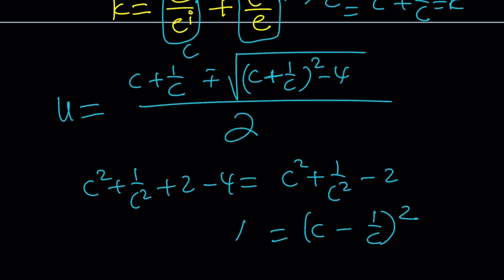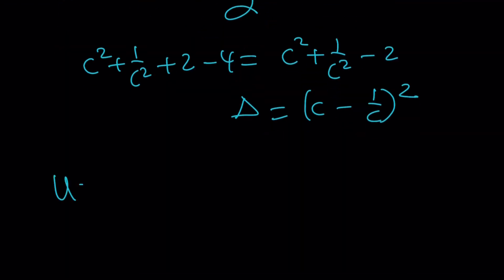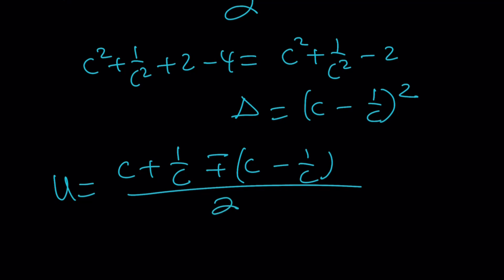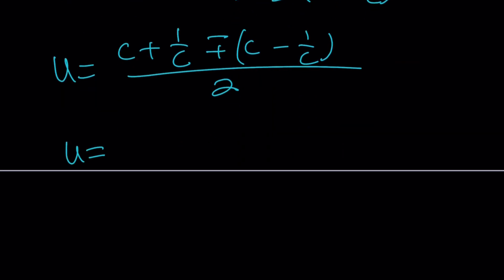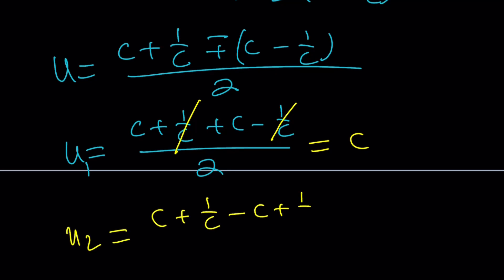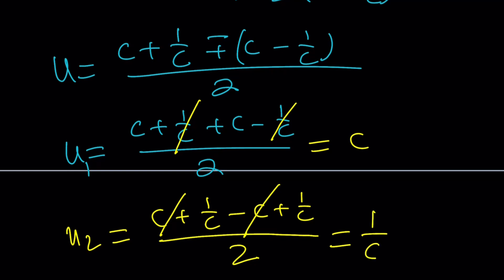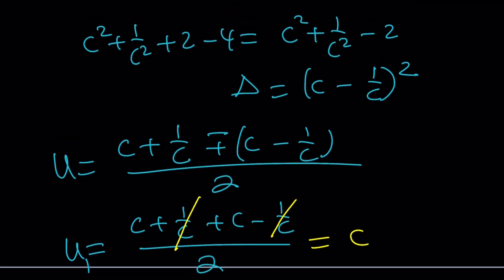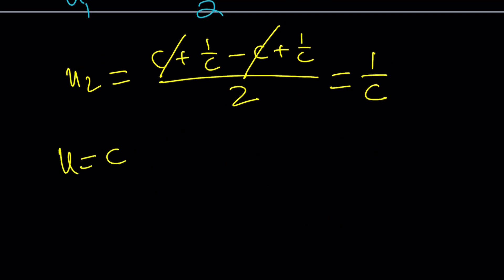There are two solutions. u sub 1: c plus 1 over c plus c minus 1 over c divided by 2 — the 1 over c cancels out — giving u1 equals c. u sub 2: c plus 1 over c minus c plus 1 over c divided by 2 — the c's cancel out — giving 2 over c divided by 2, which is 1 over c.